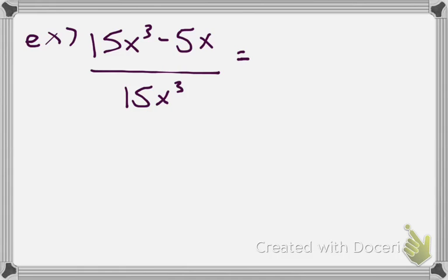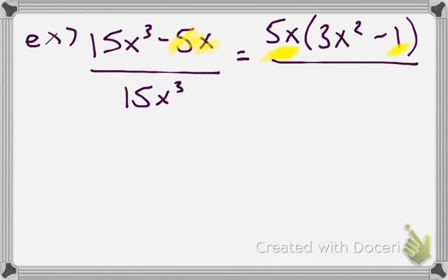If I look at my numerator, the top, I say there's a GCF there of 5x. So that goes in front. And then 15x cubed divided by 5x gives me 3x squared minus 1. If I'm dividing something like I have 5x divided by 5x, I know that I'm going to be left with 1 here. It's not zero, it's always 1. Our bottom is just a monomial, so we can't factor it.